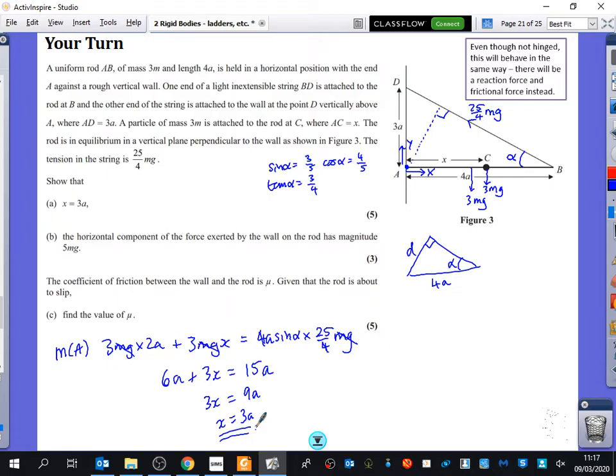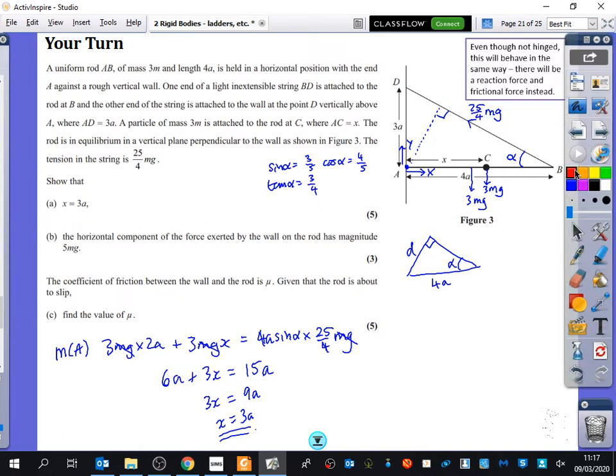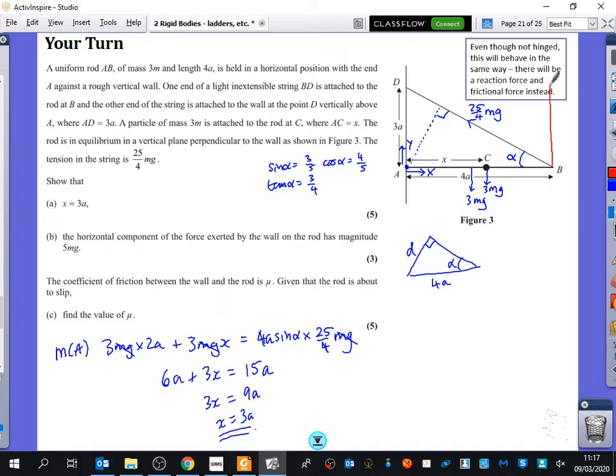The other thing we could have done is we could have taken this tension force and split it into a tension force going up and a tension force going along. If this is alpha, this one at the top is alpha. So you get 25 over 4MG cos alpha along the top, and 25 over 4MG sine alpha along the side. If you use the perpendicular distance, it's 4A multiplied by 25 over 4MG sine alpha. The only thing you need to be careful of is when you've resolved it, this force, although it looks far away from A, is actually acting in this direction, so you wouldn't include that one.